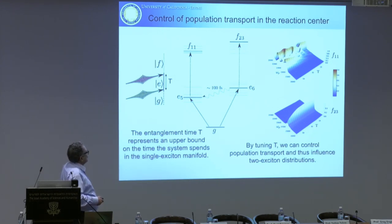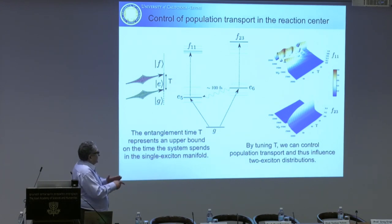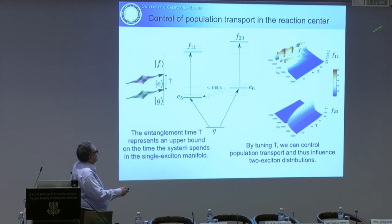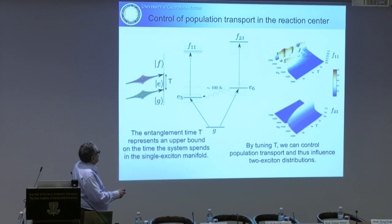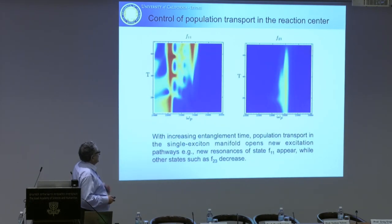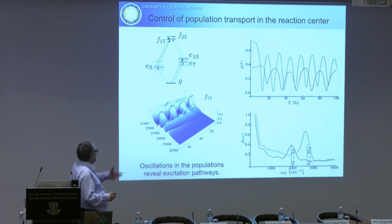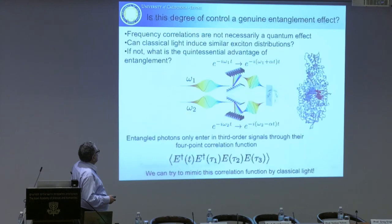By varying the entanglement time: when it is short, the entanglement is important and you get a high yield of F23; when the entanglement time becomes long, the fields behave classically and you recover F11, the usual result with classical light. So the entanglement time gives you a degree of control and a way to achieve both time and frequency resolution simultaneously.